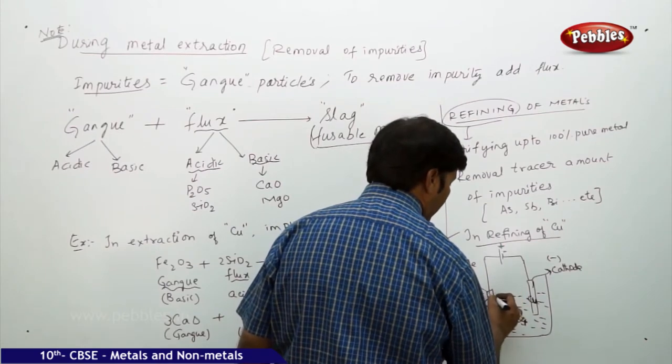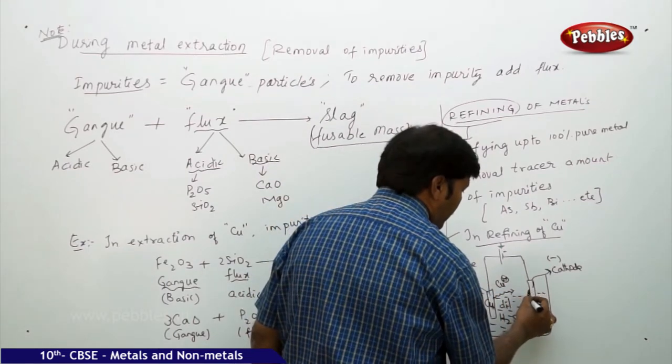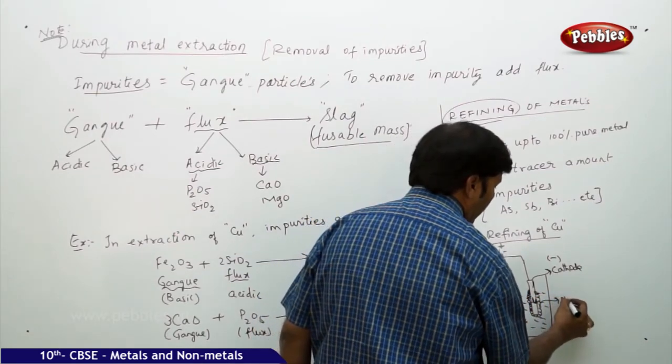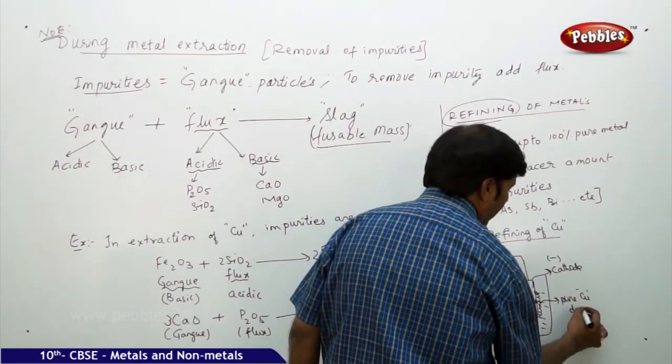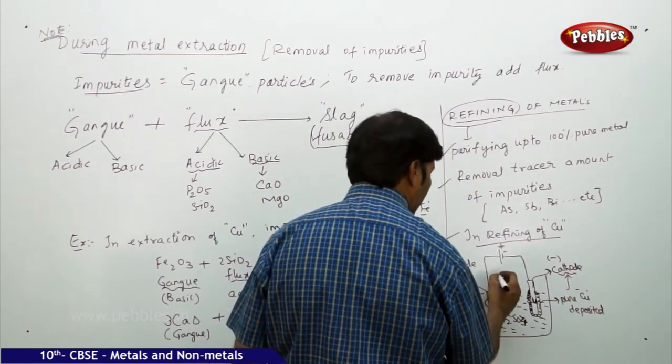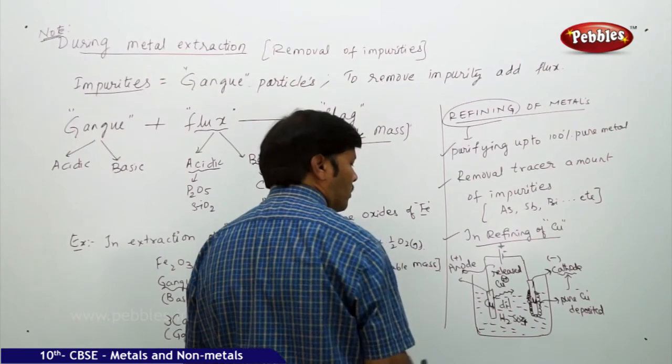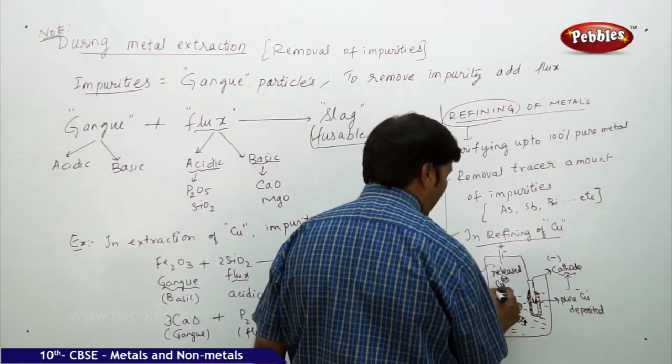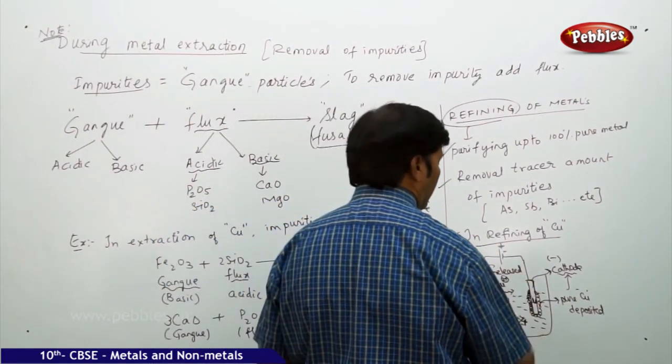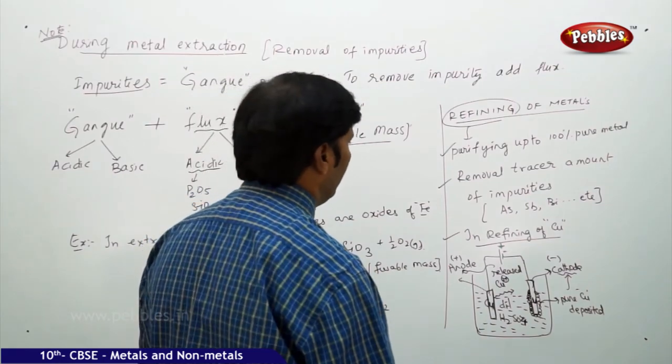What we are noticing here is, at anode, the copper ions are released. You can see that, Cu2+ ions are released at anode, and the copper metal, pure copper, is deposited, at cathode, and the copper ions are released at anode. That means, equal amount of weight is lost at the anode electrode, and equal amount of weight is gained at the cathode electrode, finally giving us 100% of pure copper, and this is how we can go for refining of metals, in particular.